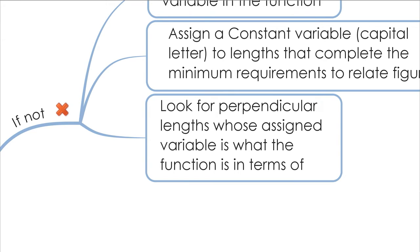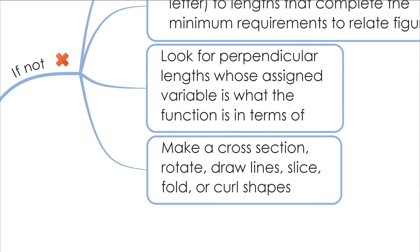Look for perpendicular lengths whose assigned variable matches what the function is in terms of. For example, if the function is in terms of h and r for height and radius, and the height is on the same line as another length related to height, you may want to make the function in terms of r, the radius, if you're dealing with a conic type shape. You can also make a cross-section diagram — rotate, draw a line, slice, fold, or curl shapes. For instance, if you start with a circle, cut a sector out, and connect the two sides together, you end up with a cone whose volume you're trying to optimize.